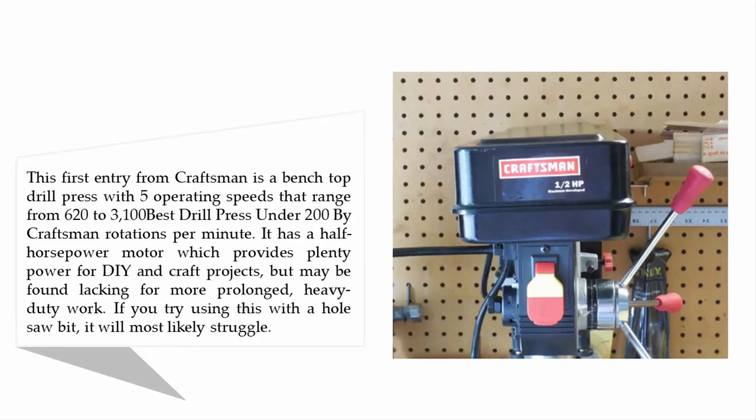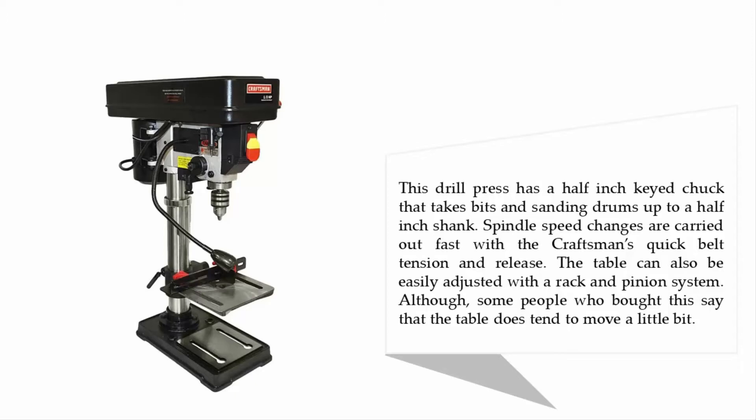This drill press has a half-inch keyed chuck that takes bits and sanding drums up to a half-inch shank. Spindle speed changes are carried out fast with the Craftsman's quick belt tension and release. The table can also be easily adjusted with a rack and pinion system, although some people who bought this say that the table does tend to move a little bit.